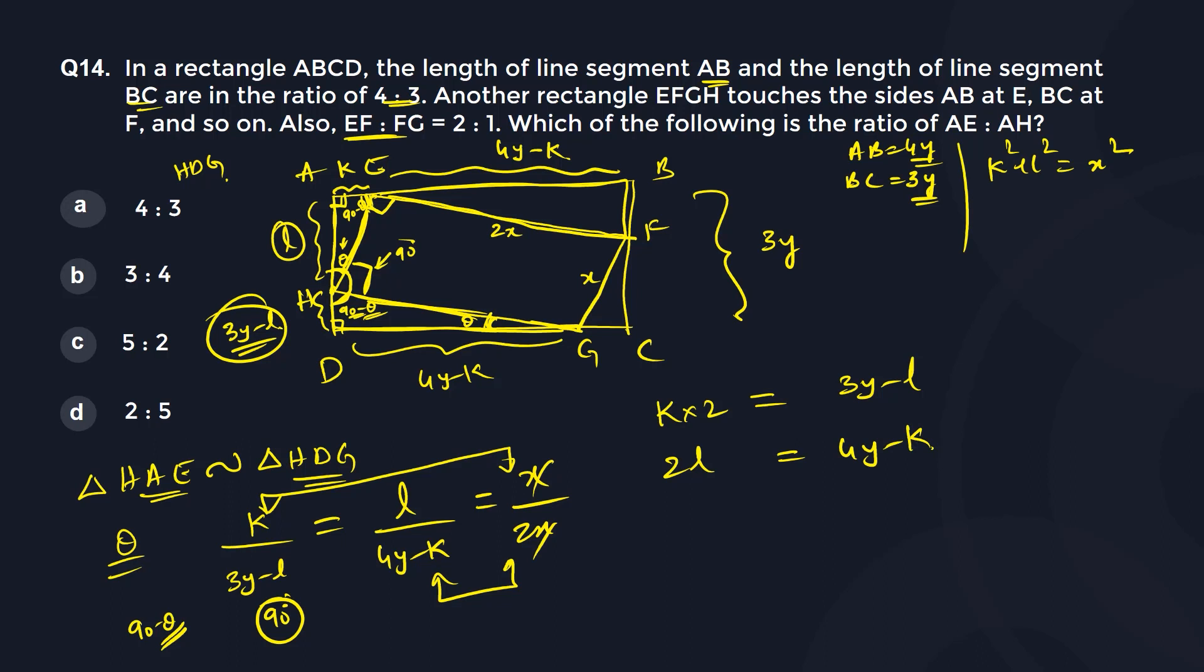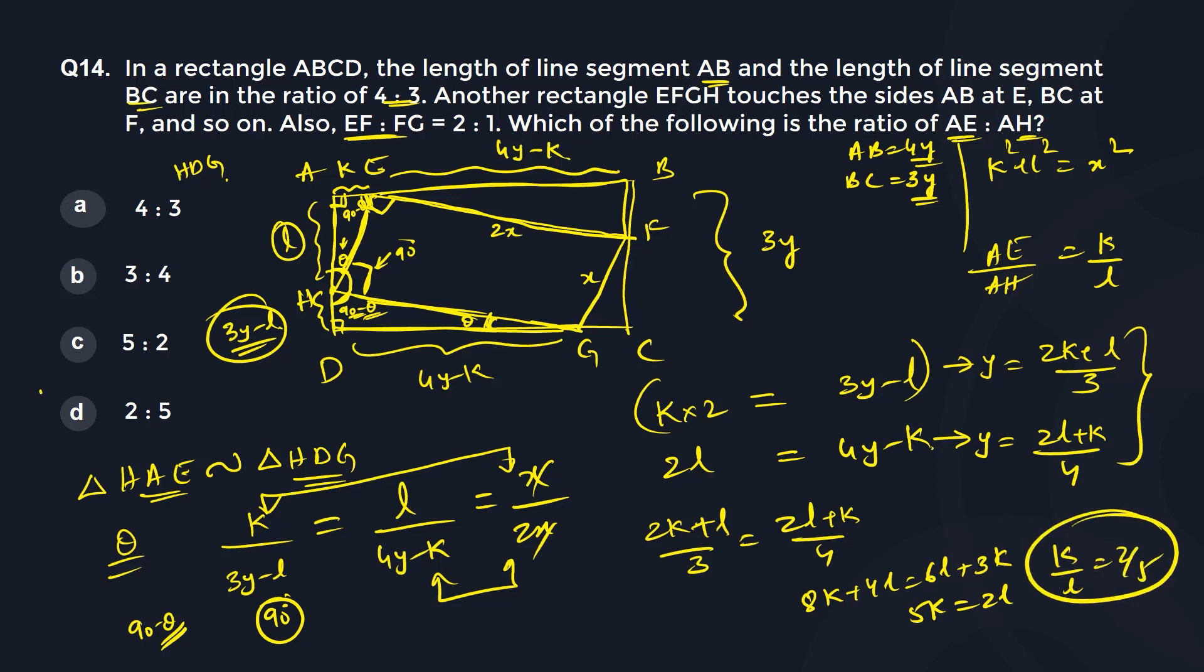Now I want the ratio of AE by AH, which is basically K by L. So I do not want Y, I only want K and L. So I will use these two equations to eliminate my Y. I can take from here Y is equal to 2K plus L by 3. From here I can take Y equal to 2L plus K by 4. And because both of them are Y, I can equate them. So if I equate them, 2K plus L by 3 is equal to 2L plus K by 4. Cross multiply: 8K plus 4L equal to 6L plus 3K. Now rearrange the terms: 5K is equal to 2L, or K by L is 2 by 5. This is what I want, which is your option D.